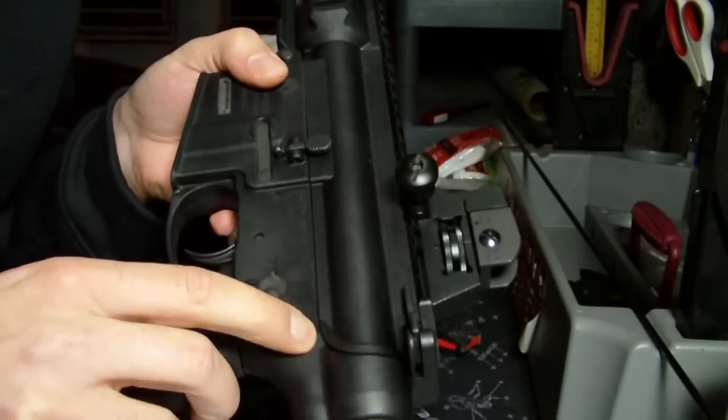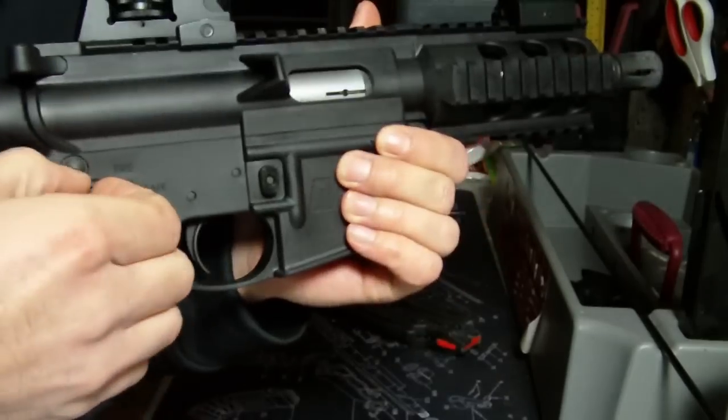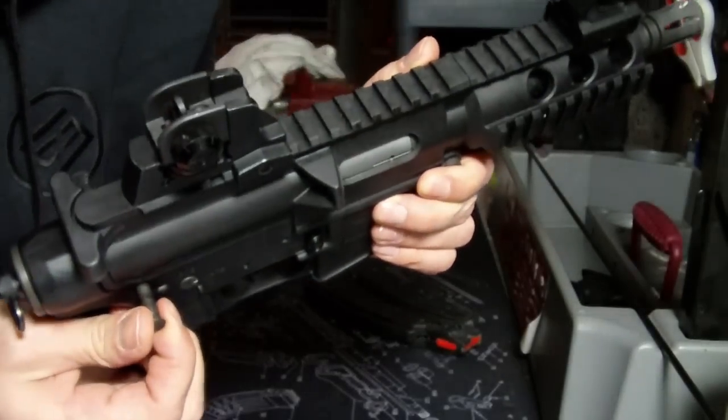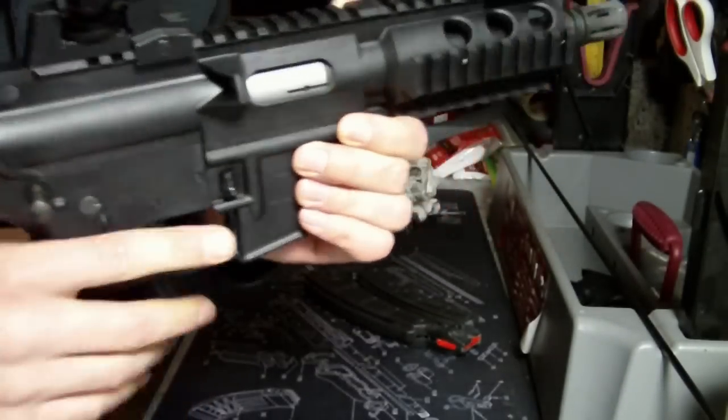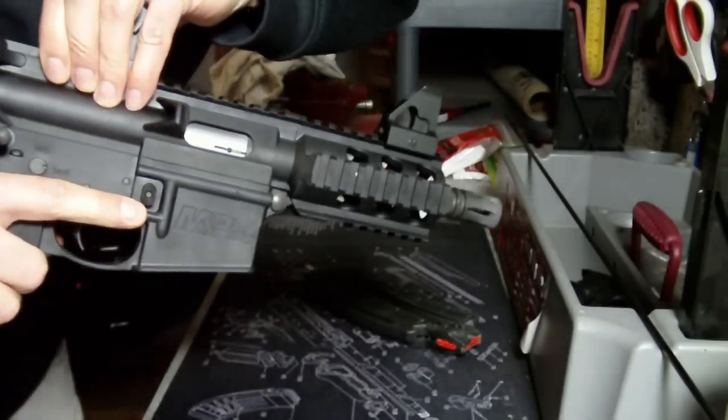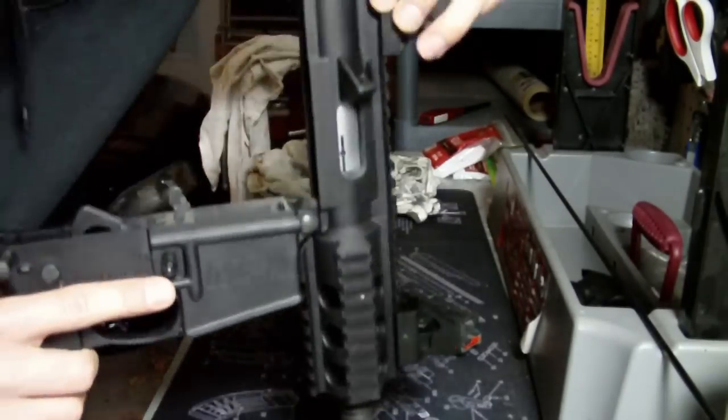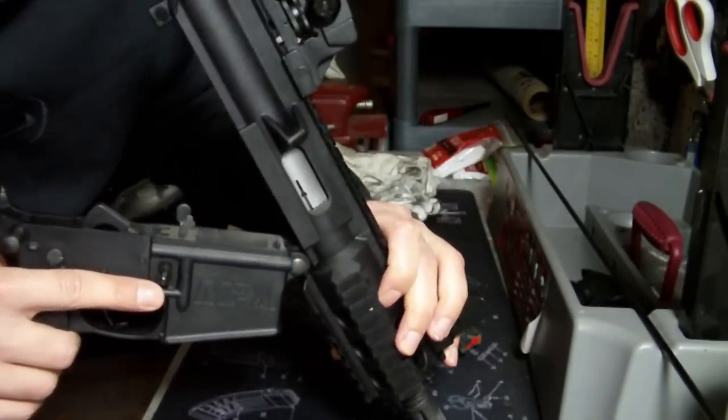You have the takedown pins that just push right out. If you actually push with your finger on it, at least mine, I can push it out with my finger. I don't even need to use a punch or anything. It doesn't come fully out, but when you do pull it out, it will allow you to rotate the upper receiver up off the lower receiver.